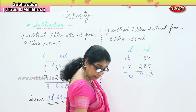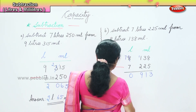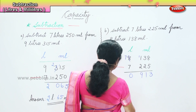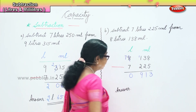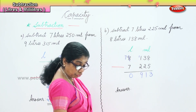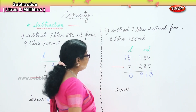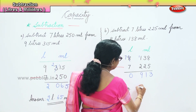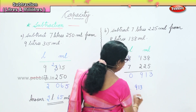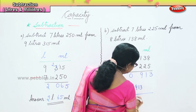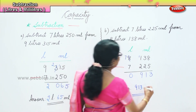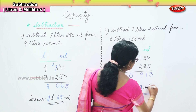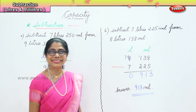Our answer is 0 liters 913 milliliters. 913 milliliters is our answer, alright?